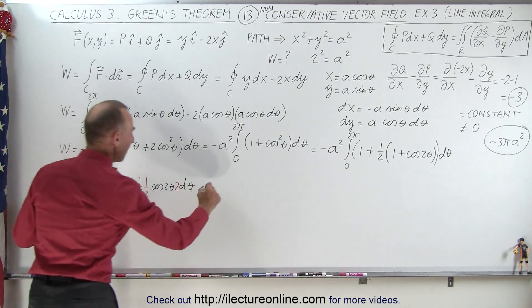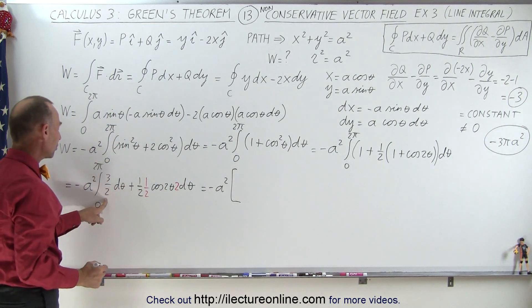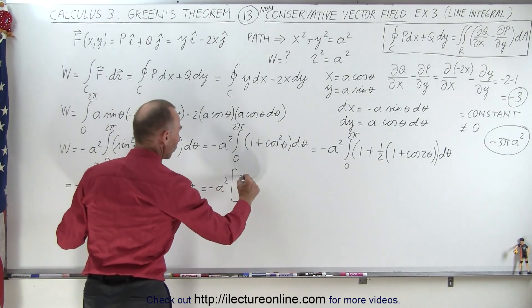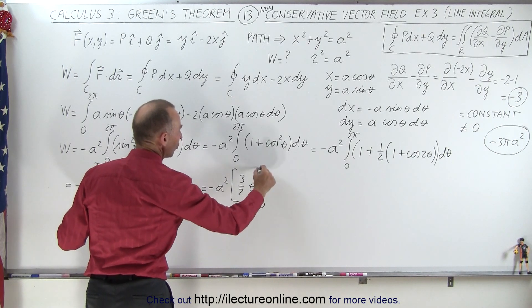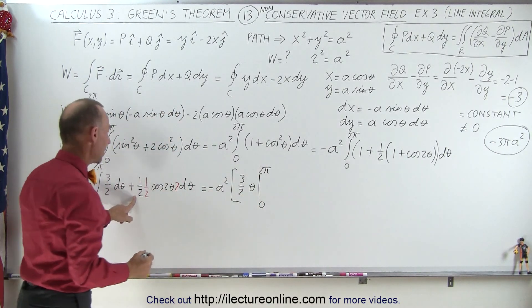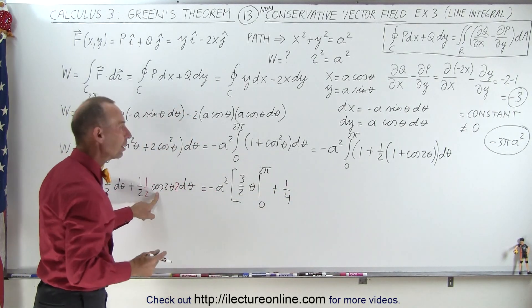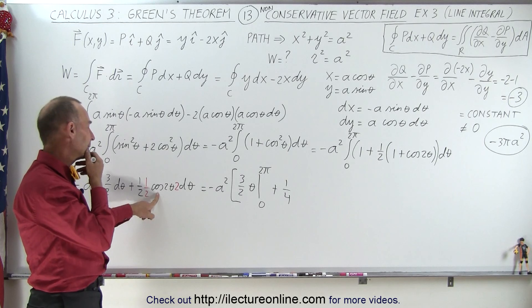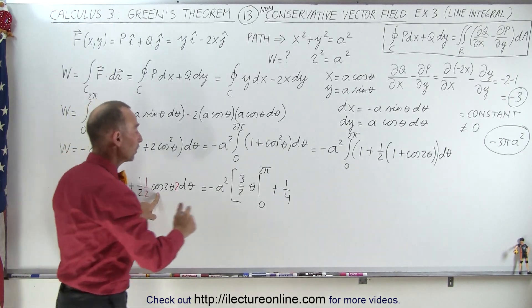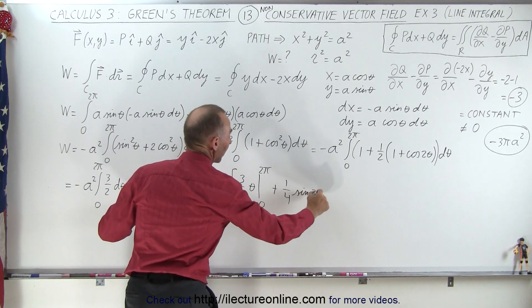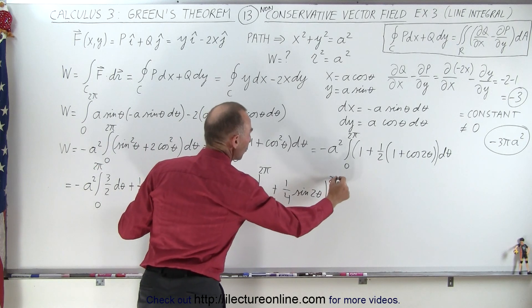This is equal to minus a squared times, so this will be 3 halves theta, so 3 over 2 theta evaluated from 0 to 2 pi. That's straightforward. And here we have plus 1 quarter, the integral of the cosine, well, that would be the sine, and it's the cosine of 2 theta, so this becomes the sine of 2 theta, evaluated from 0 to 2 pi.